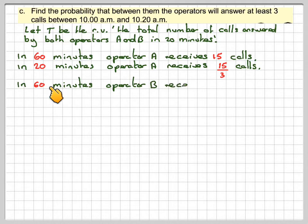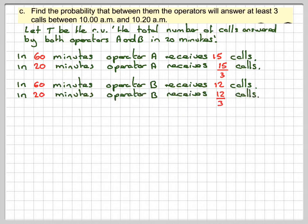And then for operator B, in 60 minutes operator B receives 12 calls, and then in 20 minutes operator B receives 12 over 3 calls.